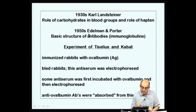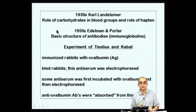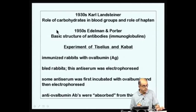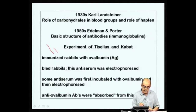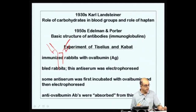In the 1950s, it was Edelman and Porter who actually came up with the basic structure of immunoglobulin molecules — that this immunoglobulin molecule has two chains: a heavy chain and a smaller chain. It is written as a Y shape, which has disulfide bridges — more of that later on.